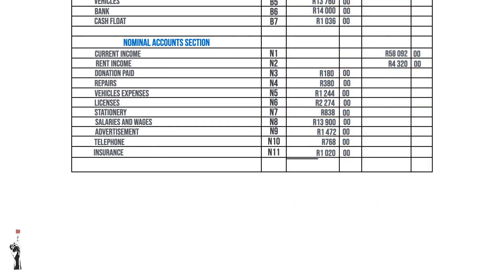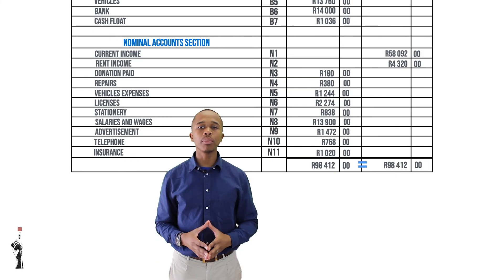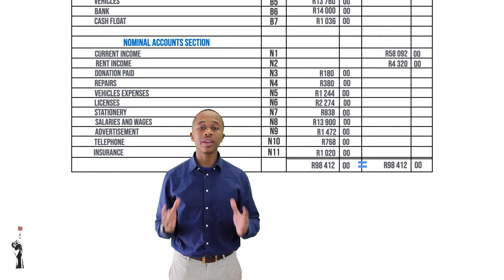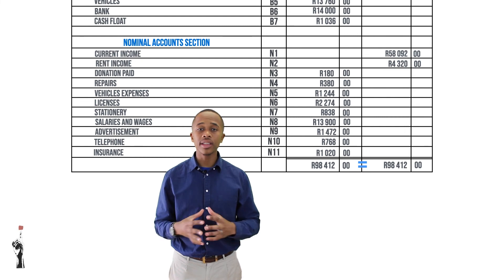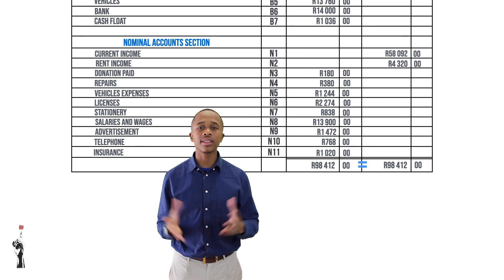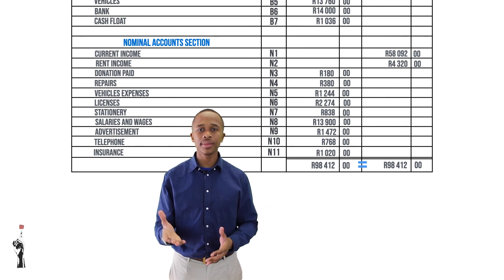At the end of the trial balance, the debit side and the credit side have to add up to the same amount. Then the bookkeeper will know that the trial balance is correct. Is the trial balance correct?